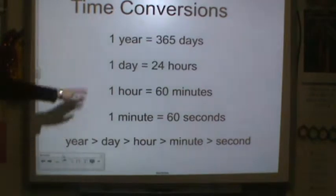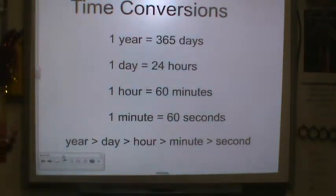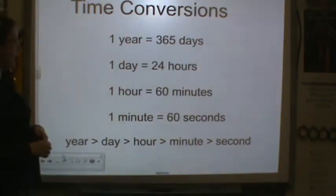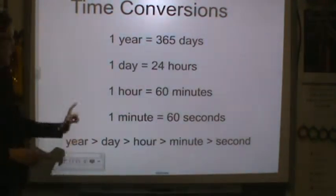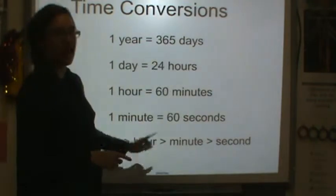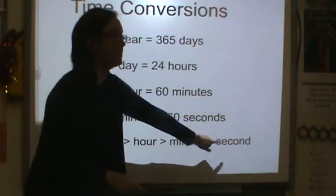And you need these conversions. A year is 365 days. One day is 24 hours. One hour is 60 minutes. One minute is 60 seconds. So a year is greater than a day, which is greater than an hour, which is greater than a minute, which is greater than a second.